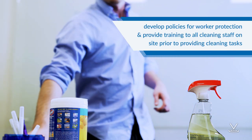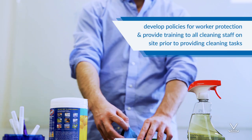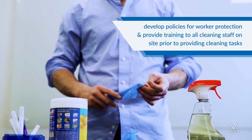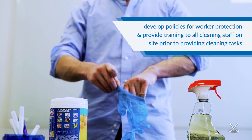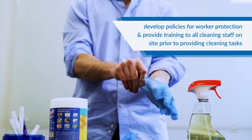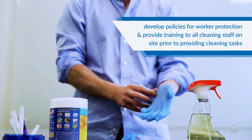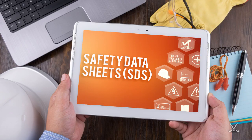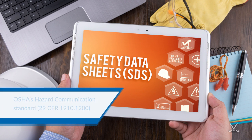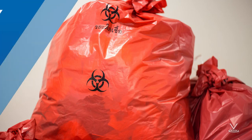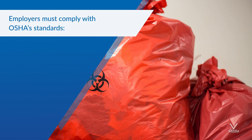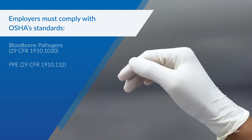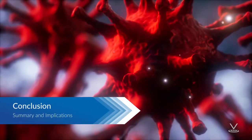Employers should develop policies for worker protection and provide training to all cleaning staff on-site prior to providing cleaning tasks. Training should include when to use PPE, what PPE is necessary, how to properly put it on, use, and take off PPE, and how to properly dispose of PPE. Employers must ensure workers are trained on the hazards of cleaning chemicals used in the workplace in accordance with OSHA's Hazard Communication Standard. Employers must also comply with OSHA's standards on blood-borne pathogens, including proper disposal of regulated waste and PPE.